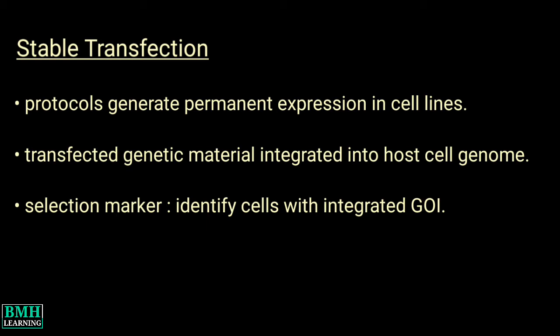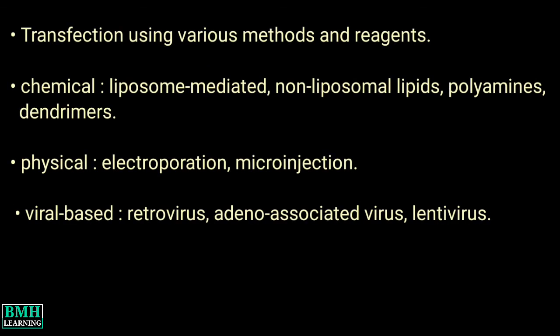A selection marker is used to identify cells that have successfully integrated the sequence of interest. Transfection of DNA or RNA molecules into cultured mammalian cells can be accomplished using various methods, including chemical methods like liposome-mediated delivery, non-liposomal lipids, polyamines, and dendrimers. Physical methods include electroporation and microinjection. Viral-based delivery systems include retrovirus, adeno-associated virus, and lentivirus.